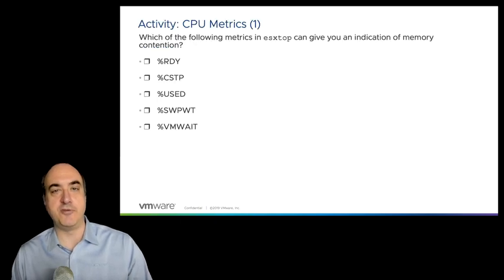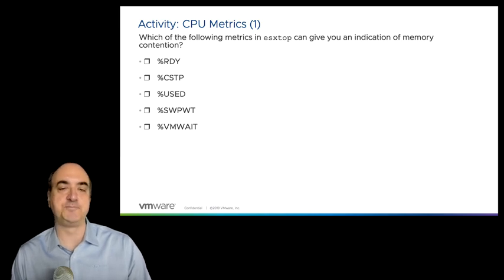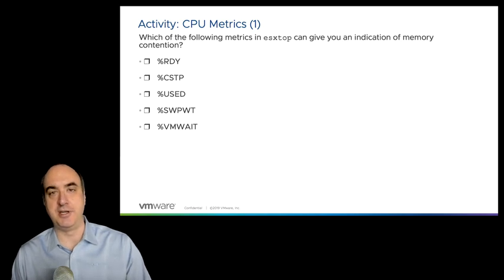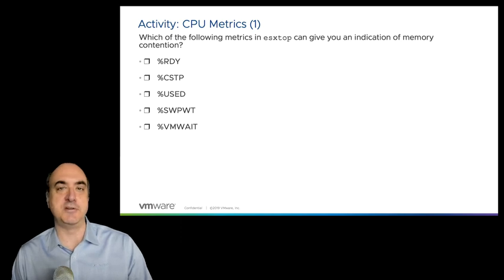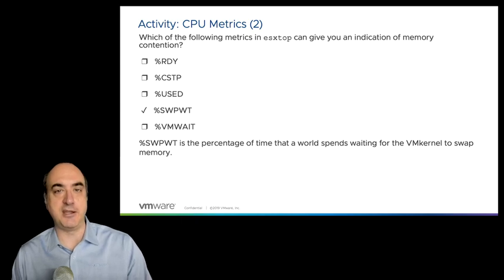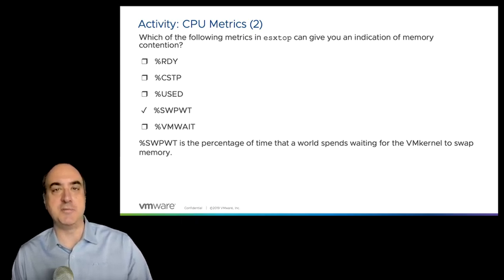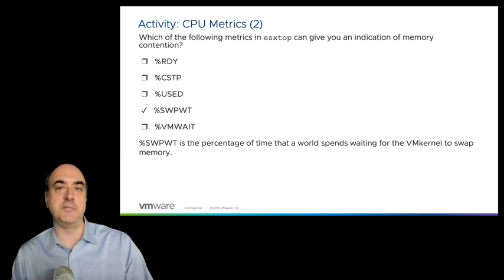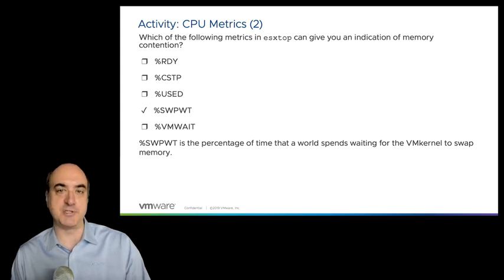The recommendation is that you don't want to have more than 10% ready values per virtual CPU — not necessarily per VM, but per virtual CPU. Also, swap weight will actually indicate that you should be looking at the memory screen, because it's telling us the VM isn't able to get scheduled to a CPU — it's basically being blocked until memory swapping has finished. So we want swap weight to be really low, less than 5%.